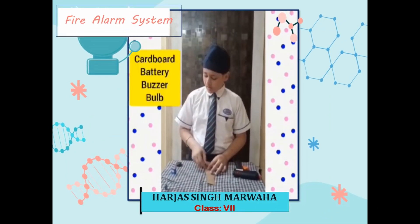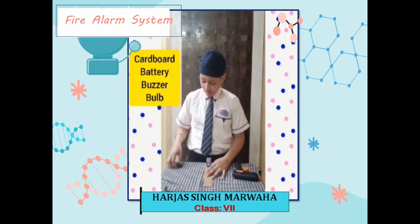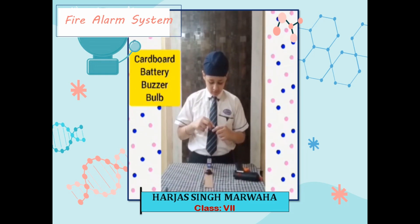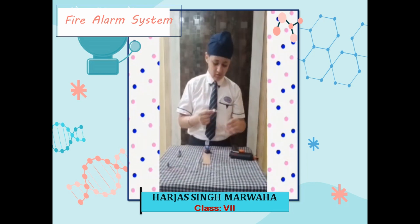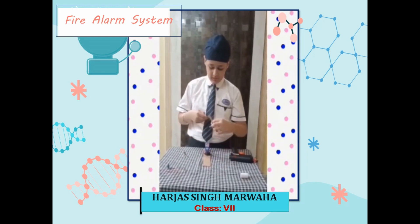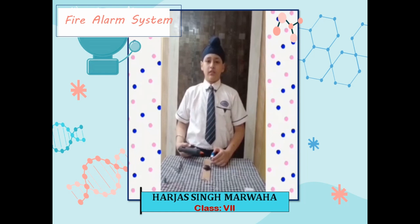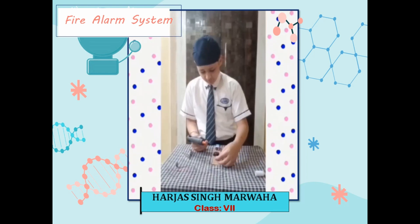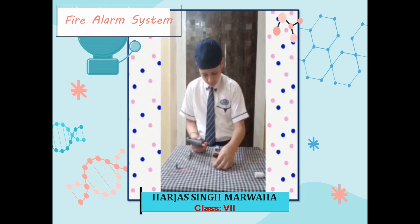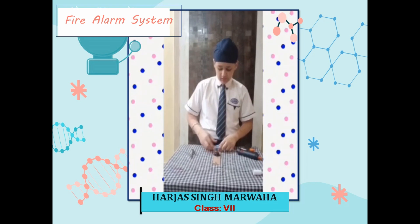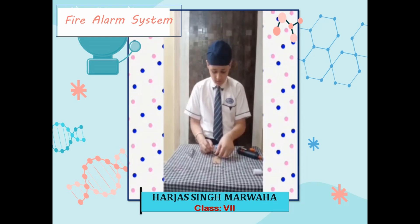We need a cardboard, a battery, and a buzzer. For the bulb, we need a starter bulb. I am removing this. To take the bulb, I will cut the wires with the ring cutter. Now I will take the battery, the buzzer, and the bulb one by one. Click the connector and connect it with the battery.